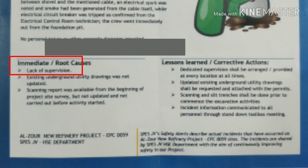For the root cause, you have to give the important points on a priority basis. The first point is lack of supervision — there was no proper supervision on site, which was the main reason. The second was that underground cable utilities were present but there was no updated information about them on the drawings.